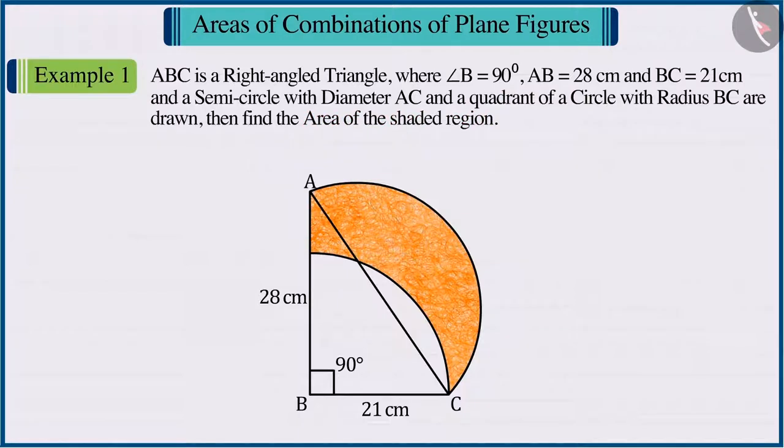Come on, let's see. By looking at the given figure, we can say that this figure is formed by the combination of three plane figures: a triangle, a semicircle, and a quadrant of a circle.